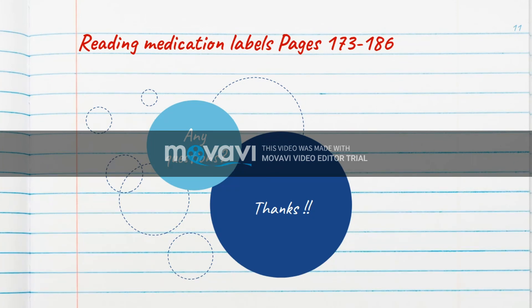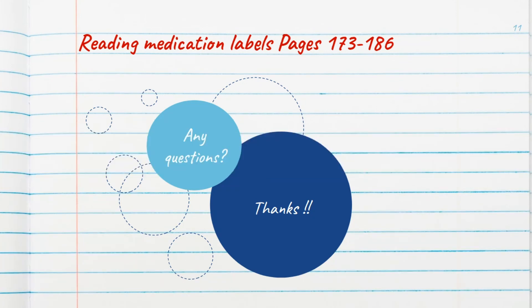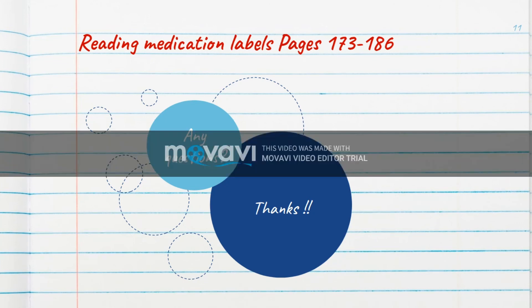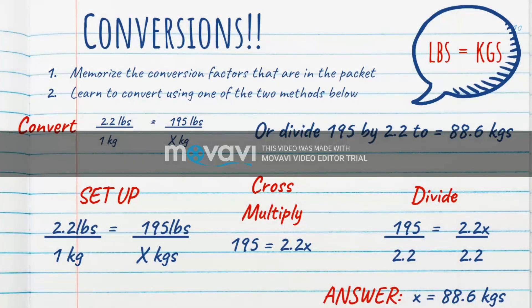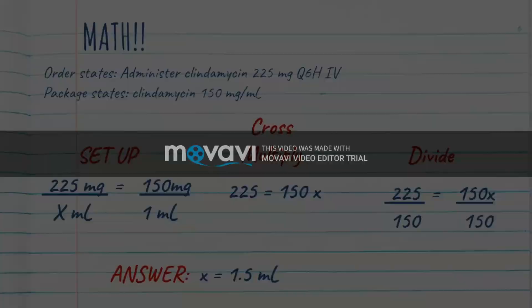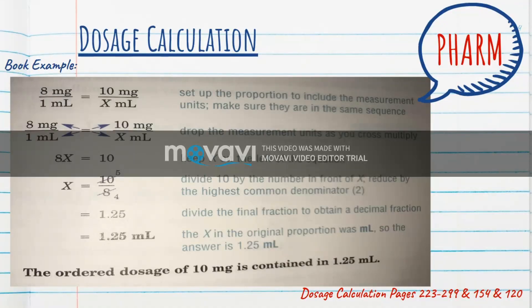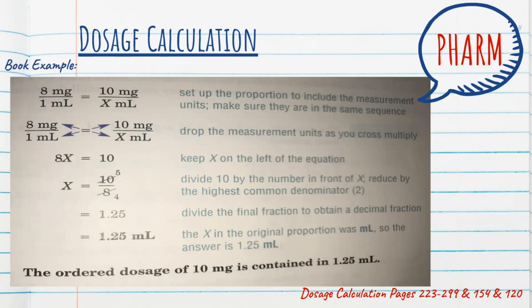And that is all of this video. I've taught you how to convert, and I have taught you, hopefully, how to make some dosage calculations. Remember, your pages are wrong. They are pages 223 to 299 and 154 and 120. If you have any questions, feel free to email me, and I'll get back to you as soon as possible.